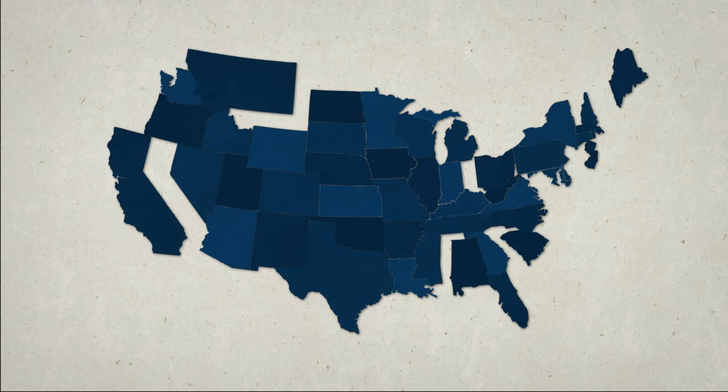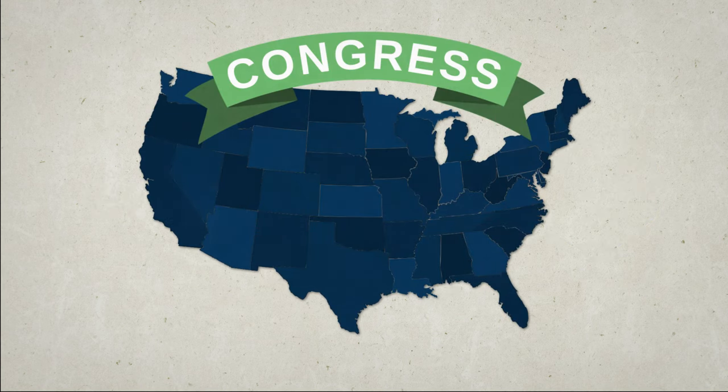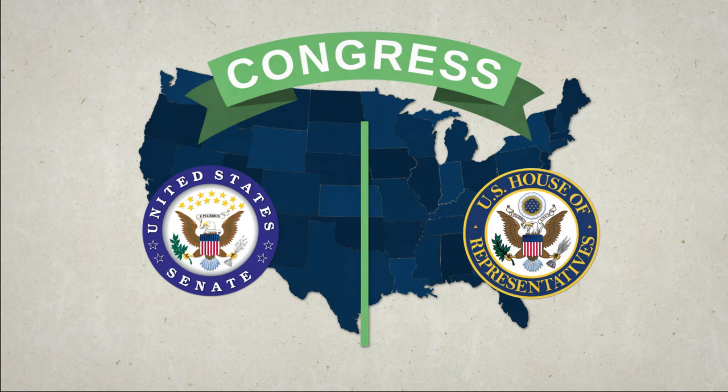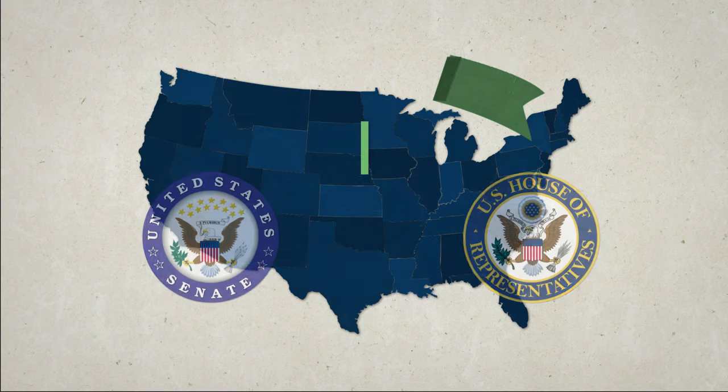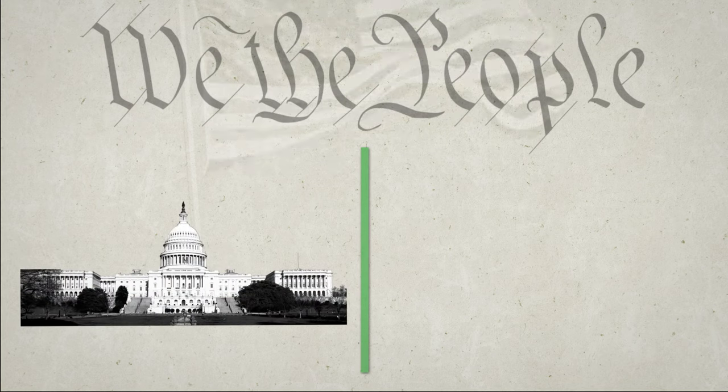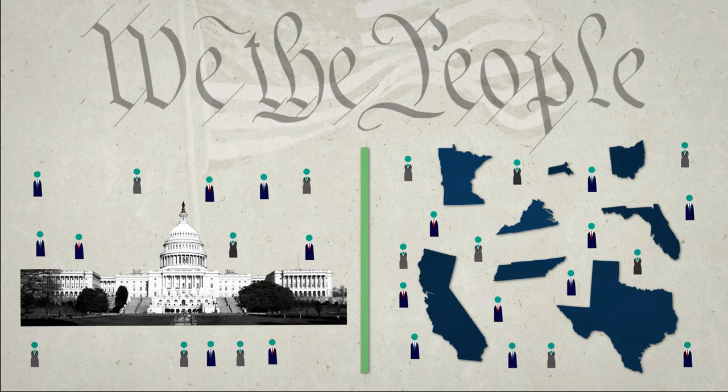In the United States, we have a federal legislature called Congress, made up of two chambers, the Senate and the House of Representatives, that governs the whole country. And we have 50 state governments that each focus on the laws in their state. We the people are represented in Washington and in our state by senators and representatives.